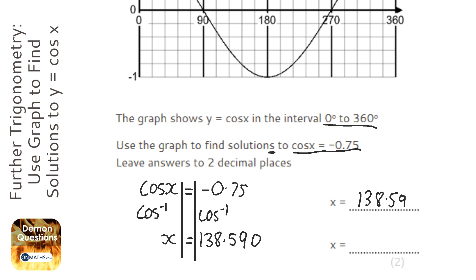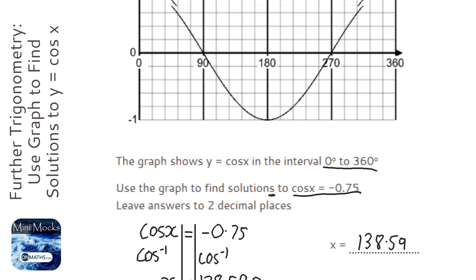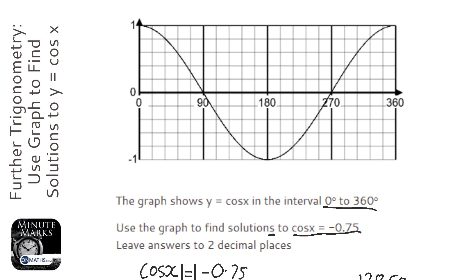Similar to where you square root something, so square root 9 on the calculator gives you the answer of 3, but we know it's also minus 3. So we need this graph to help us out here, and what we do with this graph is we draw